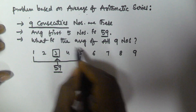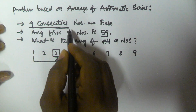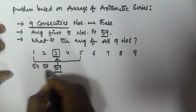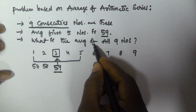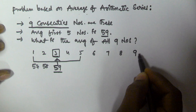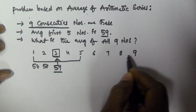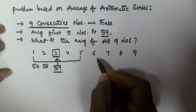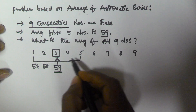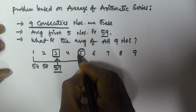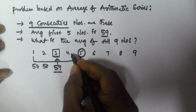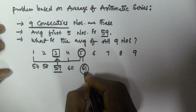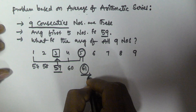Since the numbers are in consecutive order, the second number is 58 and the first is 57. Now, the average of all nine consecutive numbers is the middle number, which is the fifth number. If the third number is 59, then the fourth number is 60 and the fifth number is 61. So the average of all nine consecutive numbers is 61.